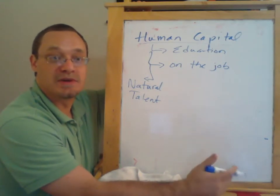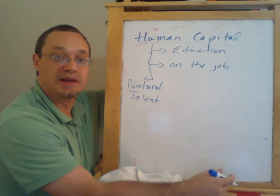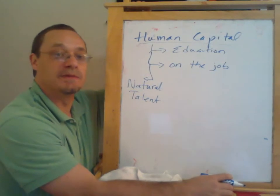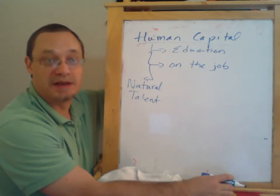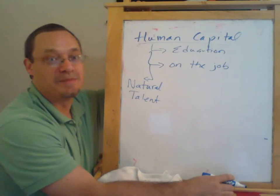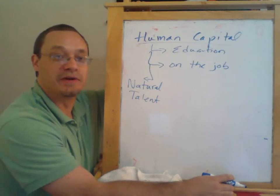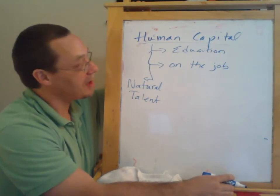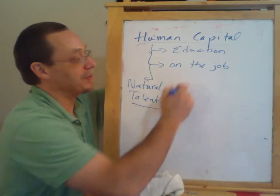If someone's a comedian, spontaneity is probably an asset and being really methodical is maybe not. If someone's an accountant, being methodical is probably an asset and being spontaneous may not be. So that's one thing about human capital.